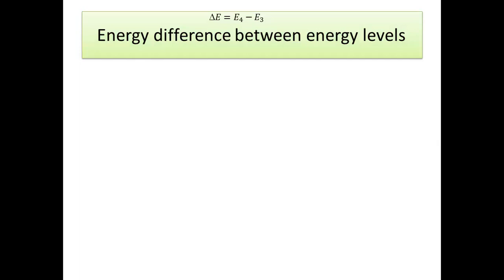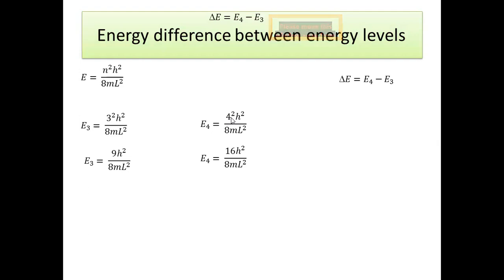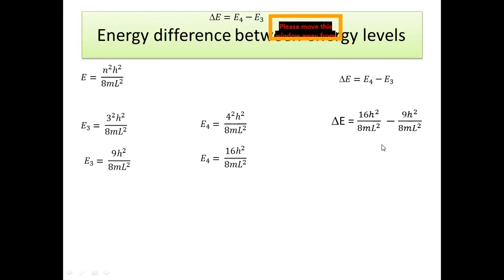In a similar way, we can calculate the energy difference between E4 and E3. Using the same equation, E3 has n=3 giving 9h²/8mL², and E4 has n=4, so taking the square of 4 gives 16h²/8mL². Therefore, ΔE = E4 minus E3, and the difference is 16 minus 9, which equals 7. So the energy difference between level 4 and level 3 is 7h²/8mL².